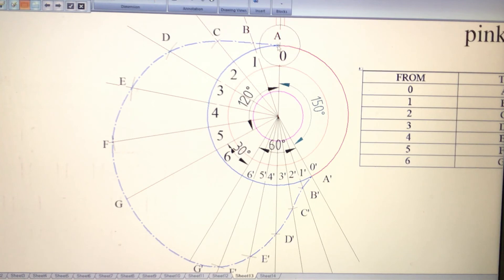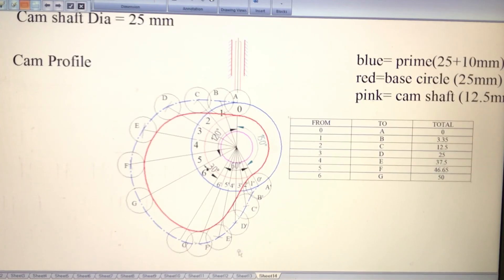After completing this, draw a curve passing through all these points - capital A, capital B, capital C - where these arcs intersect the projected lines. These are called tracing points, and this curve is called the pitch curve. In case of knife-edged follower, you won't get any pitch curve. In case of roller follower, you'll get pitch curve as well as prime circle.